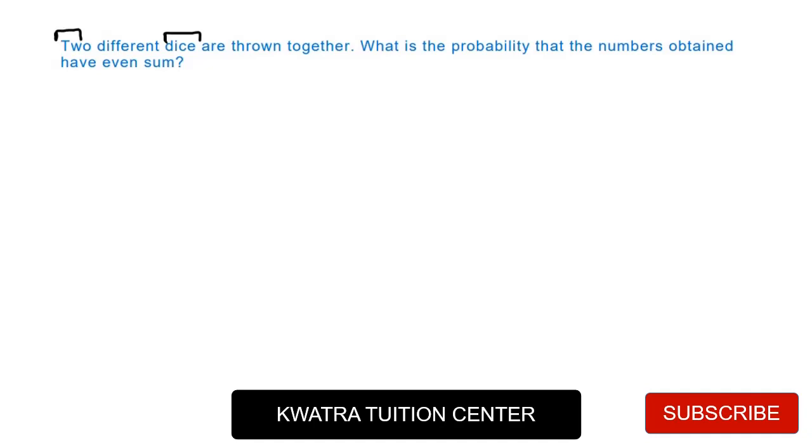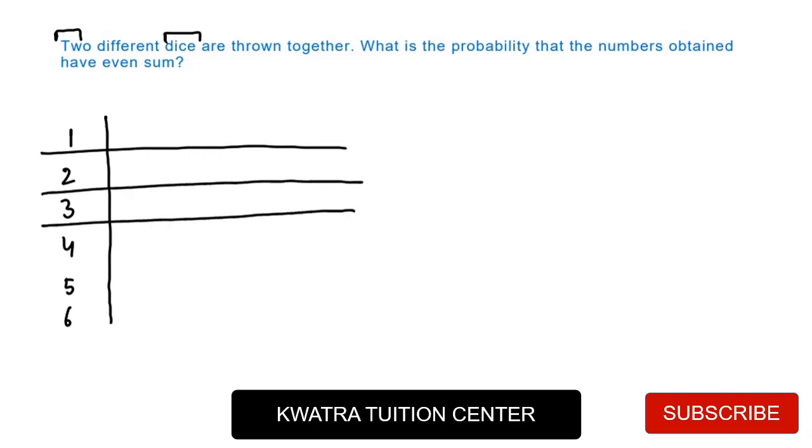Two dice means how many total possible outcomes will be? It will be 36. So let's create it. You can see how to create it, but for those who don't know, they can learn. So what do you have to do? First of all, you have to write 1, 2, 3, 4, 5, 6, whatever possible outcomes are. You will mention both sides because we have two dice in this case.